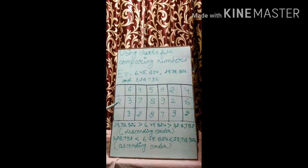Then we can see here this number is greatest, and then this number, and then this number. And we have to arrange the given number in descending order. Descending order means from greatest to smallest. This number is greatest. First of all we will write this number, then this number, and then this number. It is in descending order.